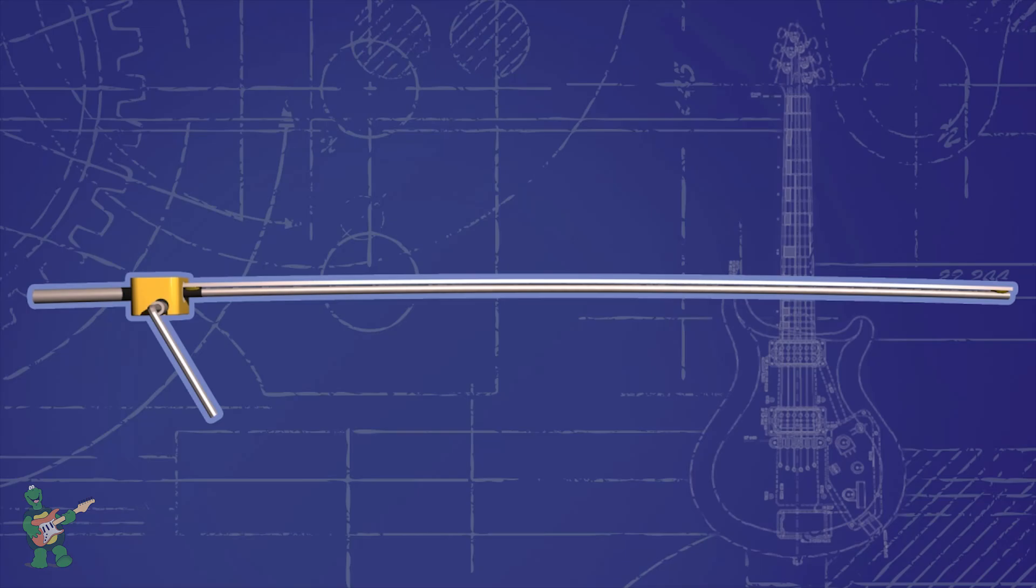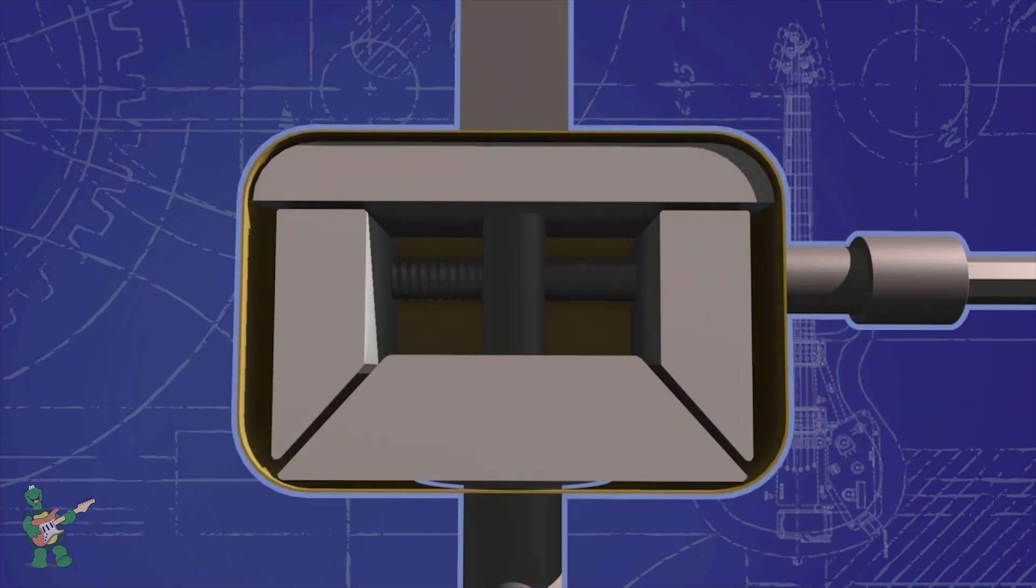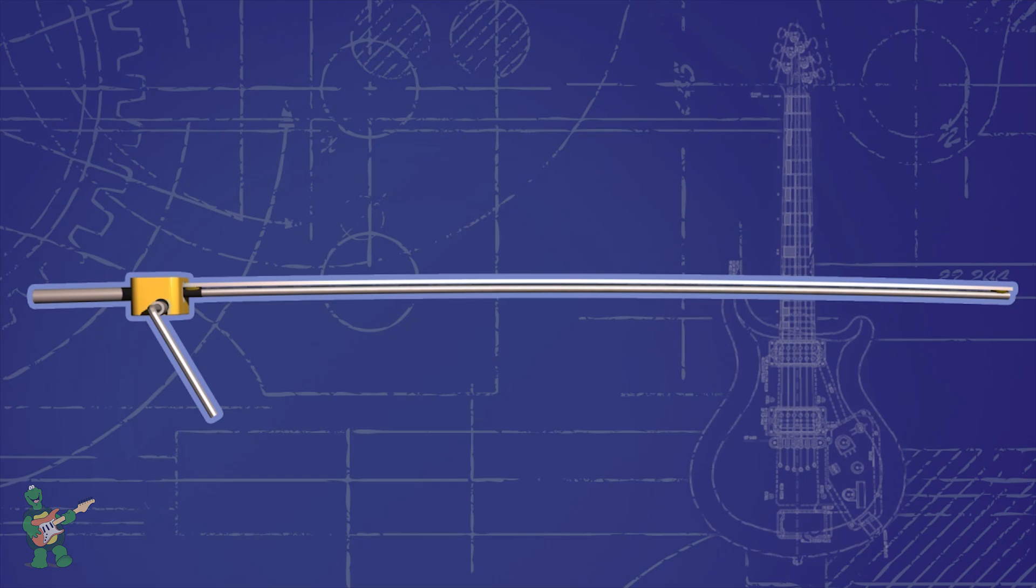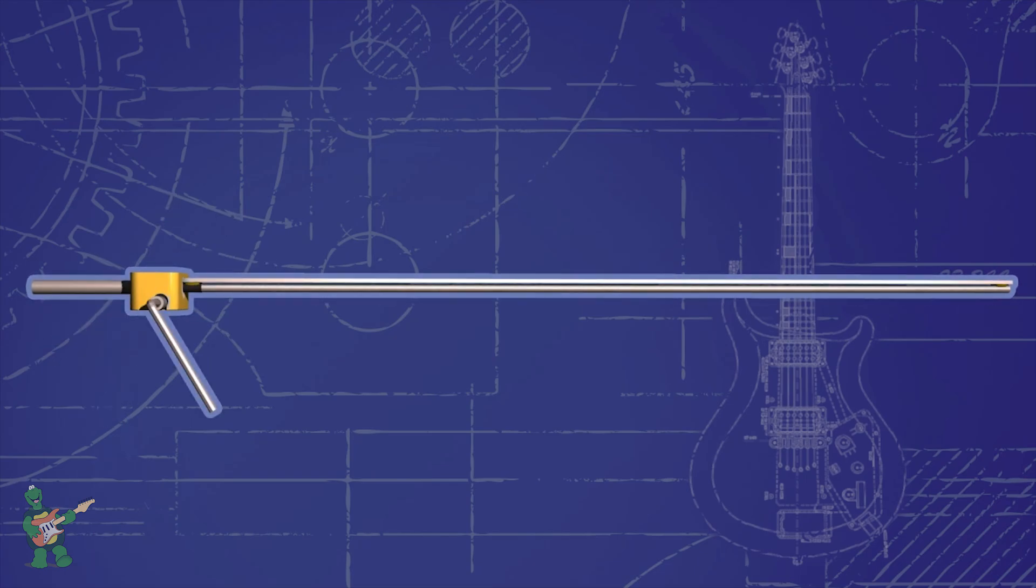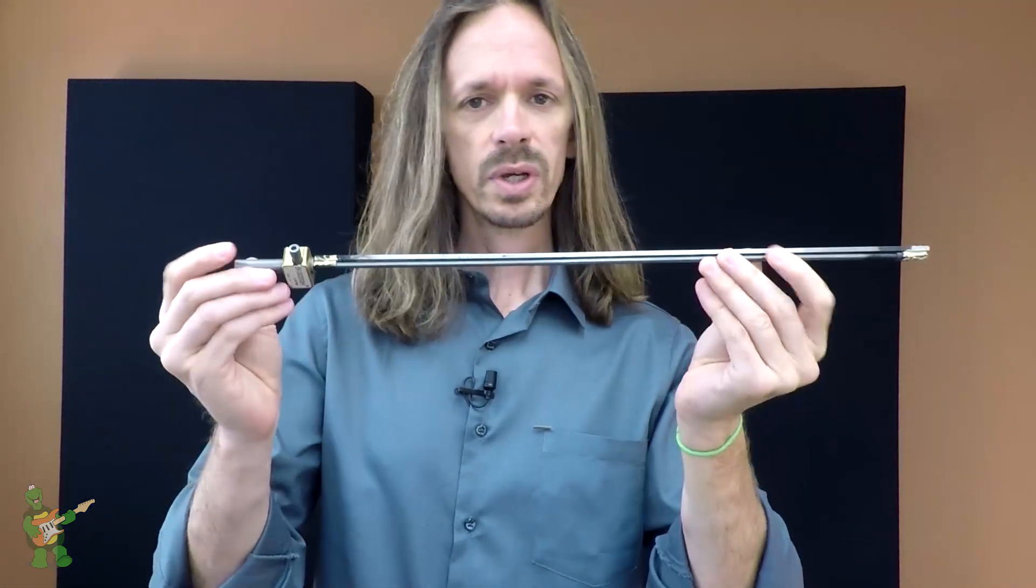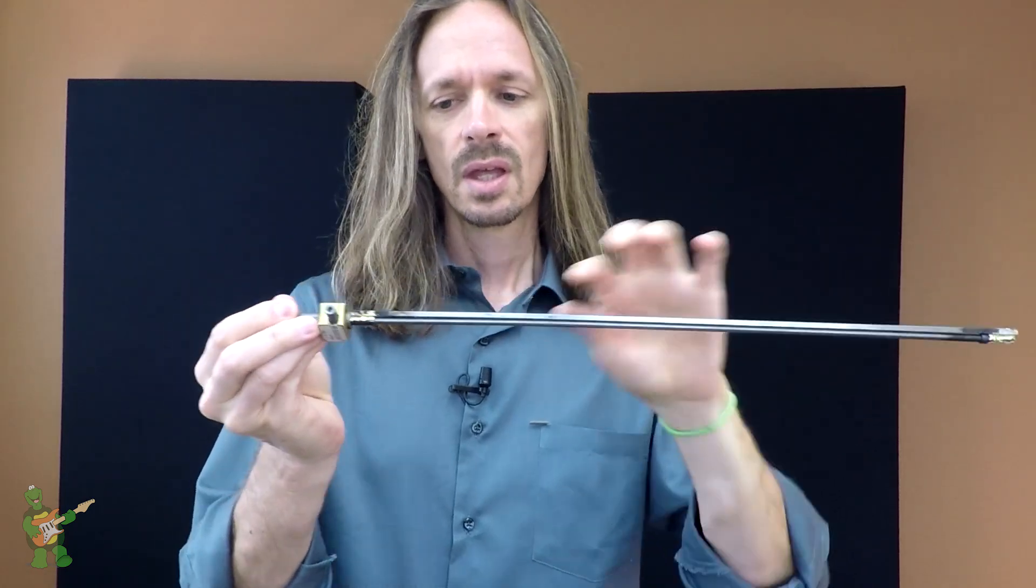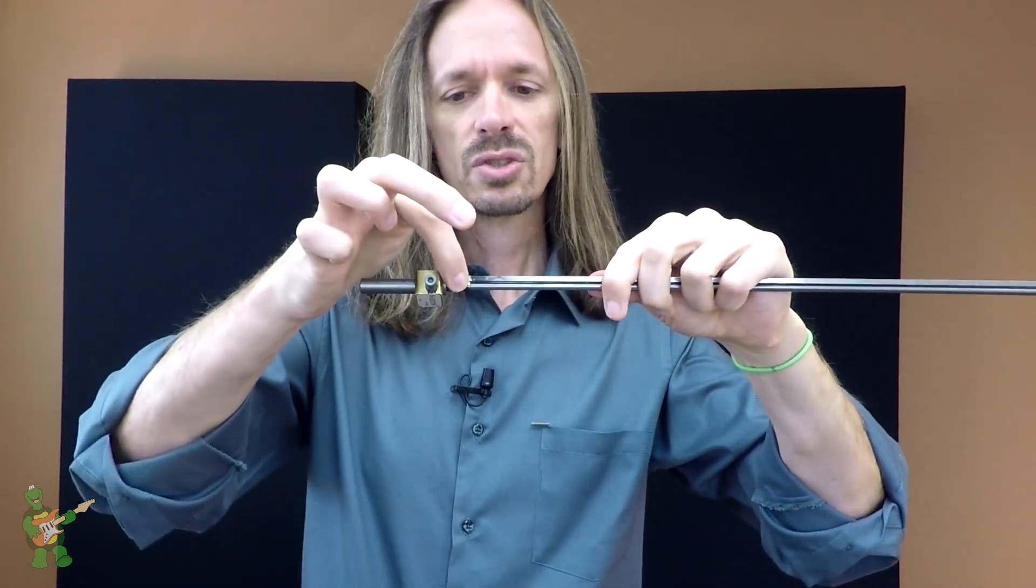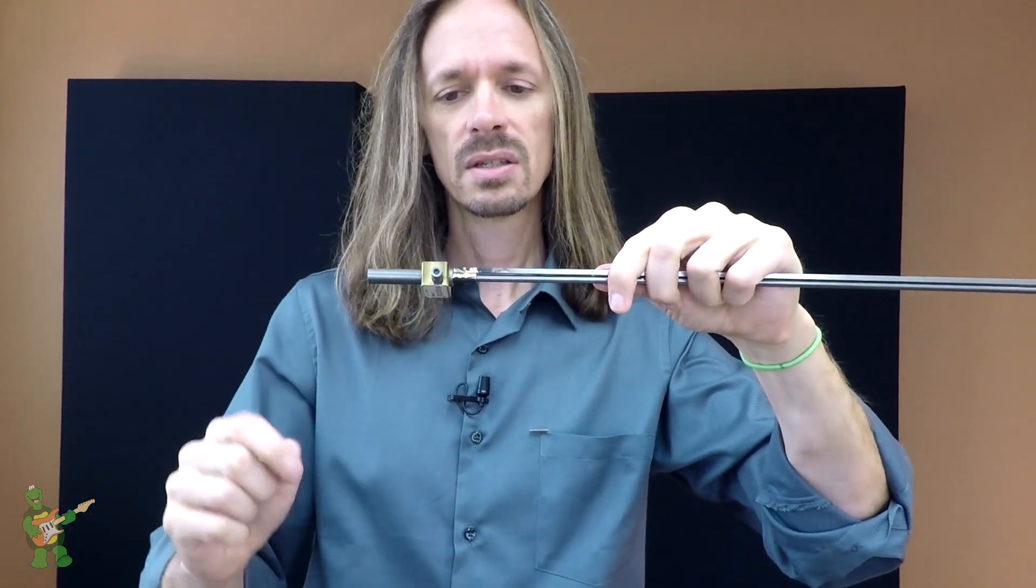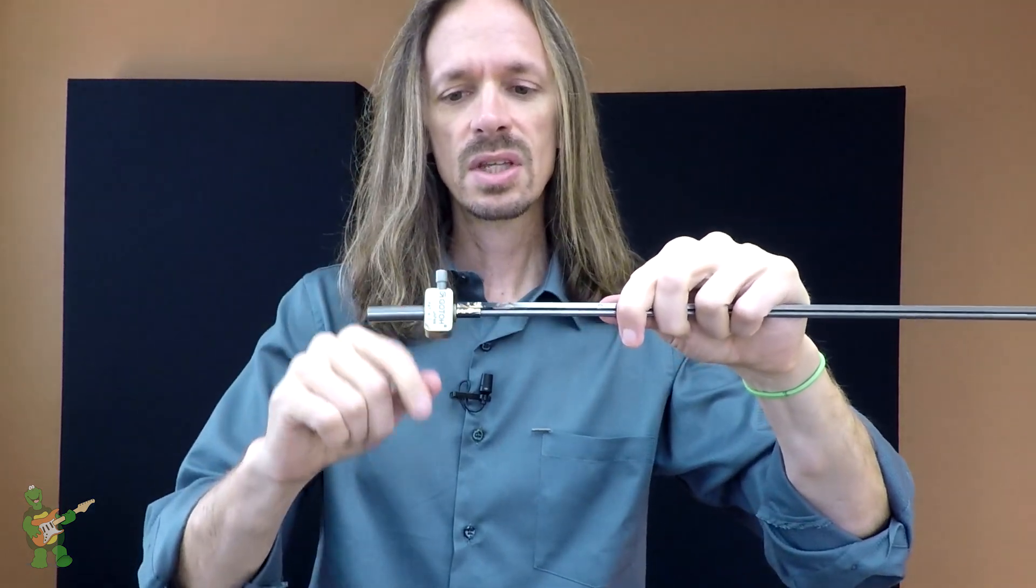And then of course, as you loosen the side screw again, the side wedges move outward, the end plates come back towards the center, and the truss rod relaxes back to its flat position. Okay, so here's our double truss rod again, only now in between the tube and the adjustment nut we have the side adjust mechanism.